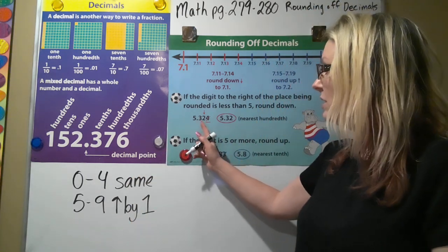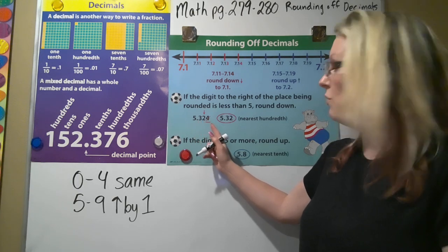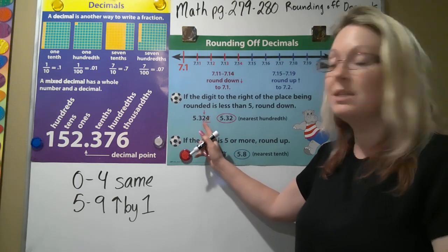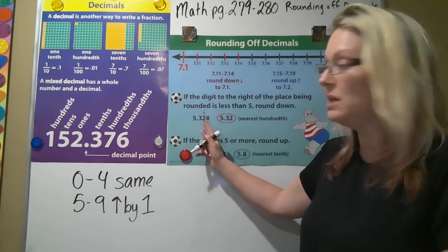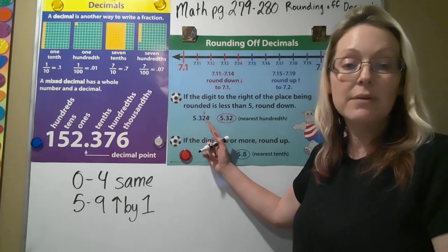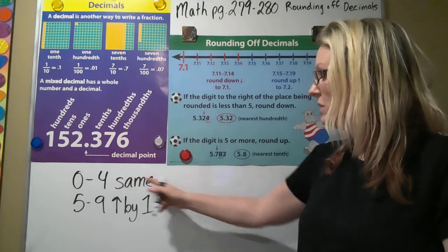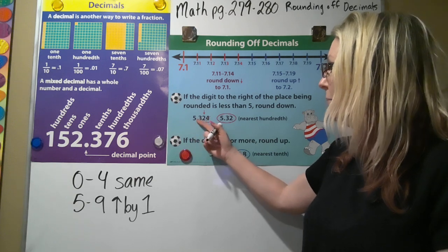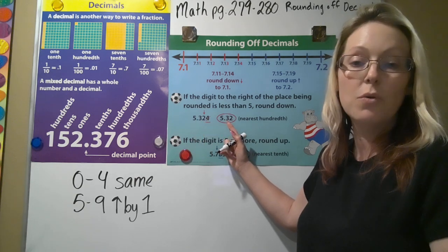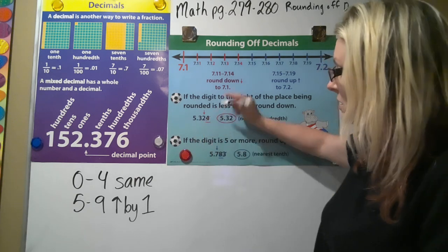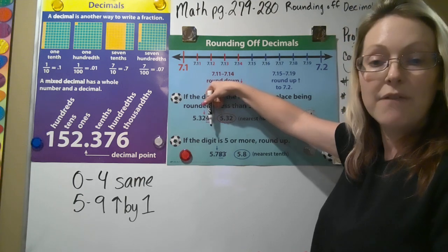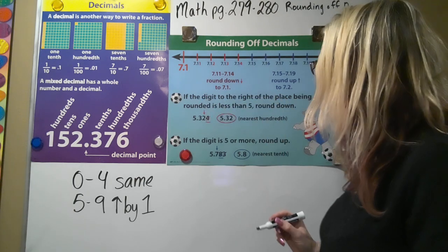If we look at this number, 5.324, we're rounding the two because that's the hundredths place. We're using the four. Now take a look: four, zero to four stays the same. So that means we would round this to 5.32 because all we're doing is eliminating that four.